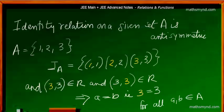Of all the relations we have dealt with, the identity relation is quite a straightforward case of anti-symmetric. Let us look at a simple case to prove the point.